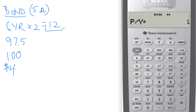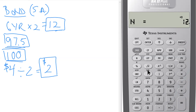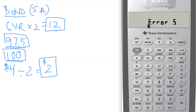We have the present value, the future value, and the coupon. Since this is an annual coupon, we divide by two to get a $2 coupon per period. Let's enter these items: N = 12, PV = 97.5, FV = 100, PMT = $2. Now we're going to compute the interest rate. If I push Compute and Interest...